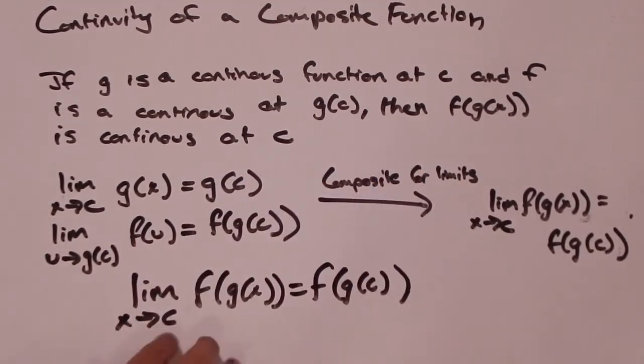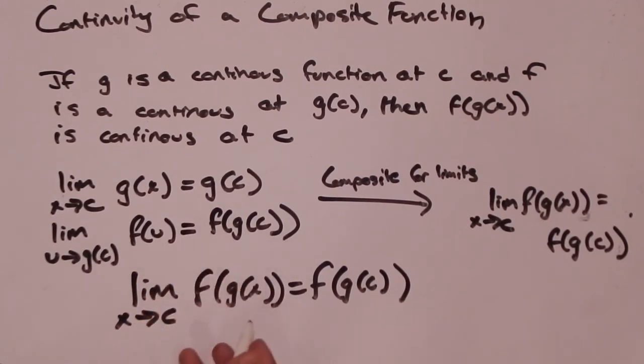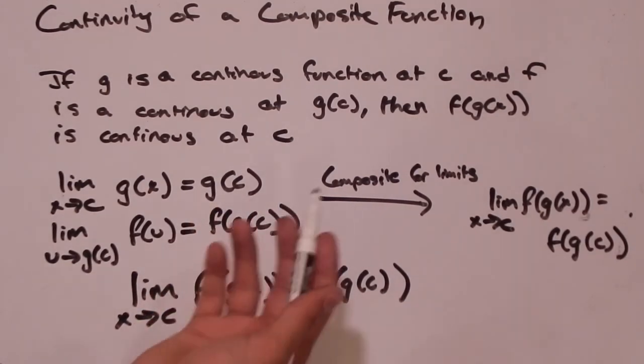And that implies that this function f(g(x)) is continuous at c because the limit as x goes to c of f(g(x)) is equal to f(g(c)).